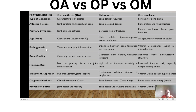In terms of pathophysiology: osteoarthritis results from wear and tear affecting the weight-bearing joints. Osteoporosis involves an imbalance between bone formation — aided by osteoblasts — and bone resorption by osteoclasts, resulting in reduced bone density. Osteomalacia results from vitamin D deficiency.